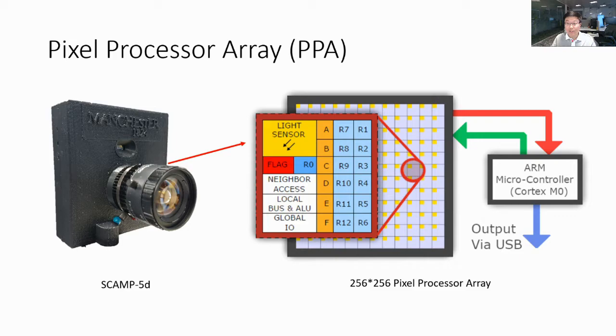The SCAMP-5 incorporates 256x256 PPA array or pixel processors, each containing light sensor, local memory registers, and other functional components. A standard ARM processor provides overall program control.